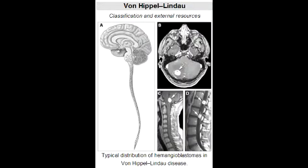What is Von Hippel-Lindau disease? Von Hippel-Lindau disease is a rare autosomal dominant genetic condition that predisposes individuals to benign and malignant tumors.